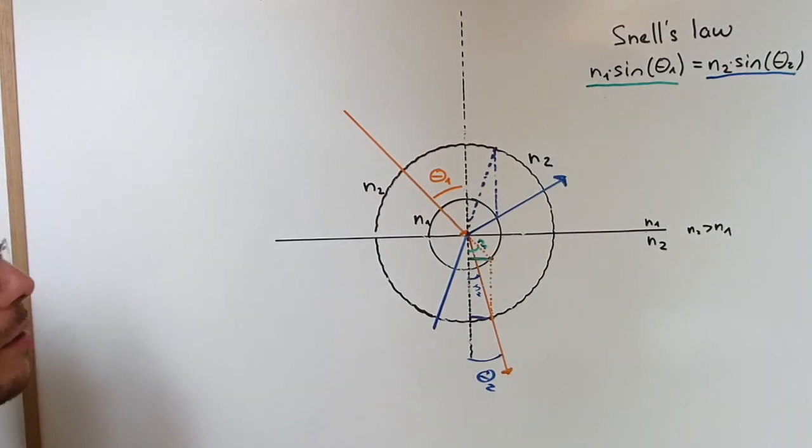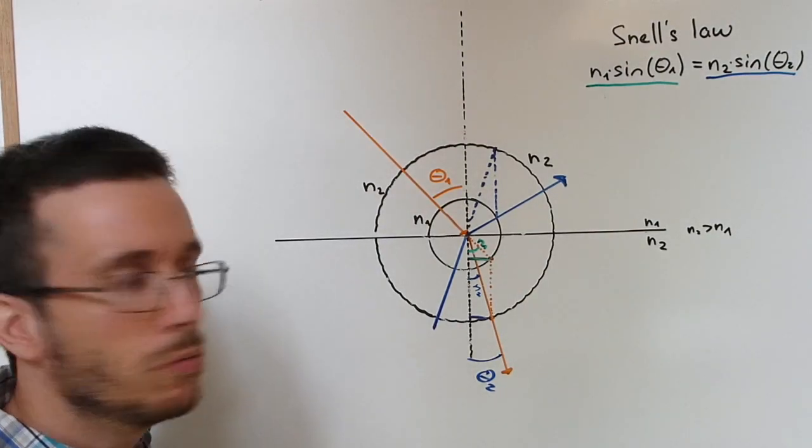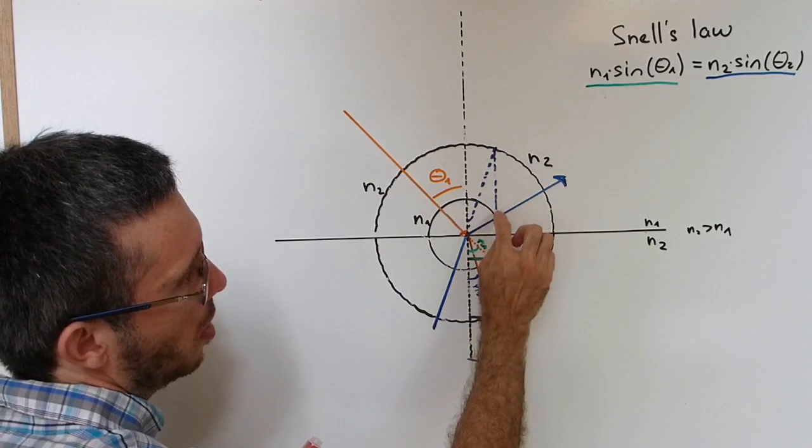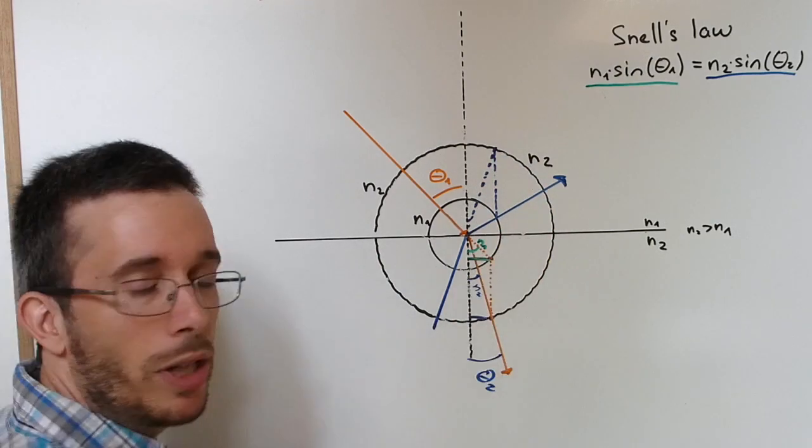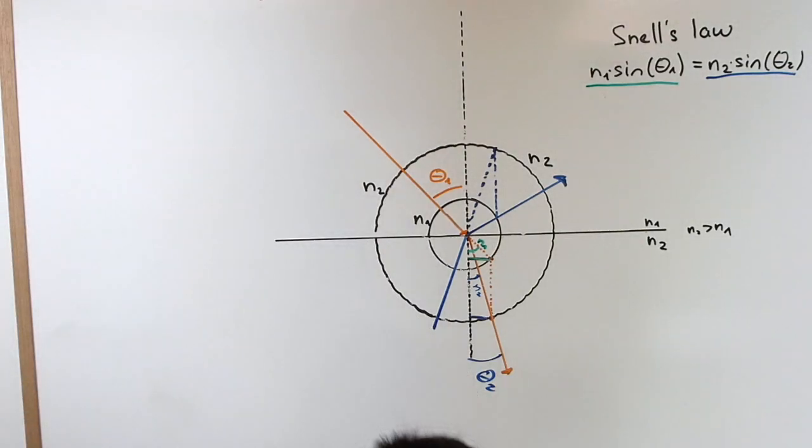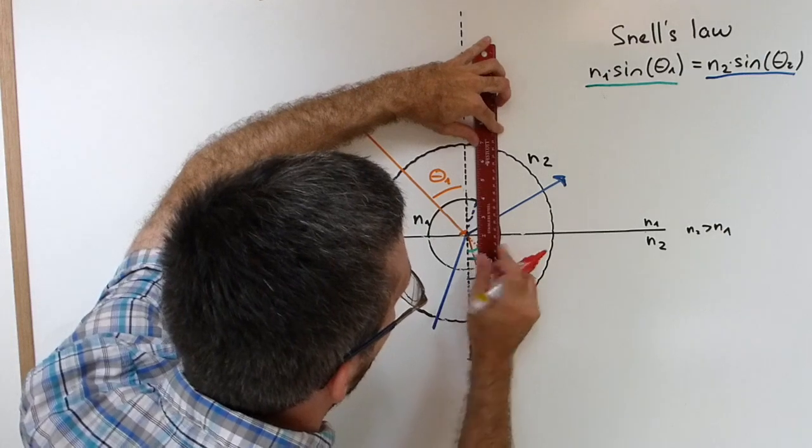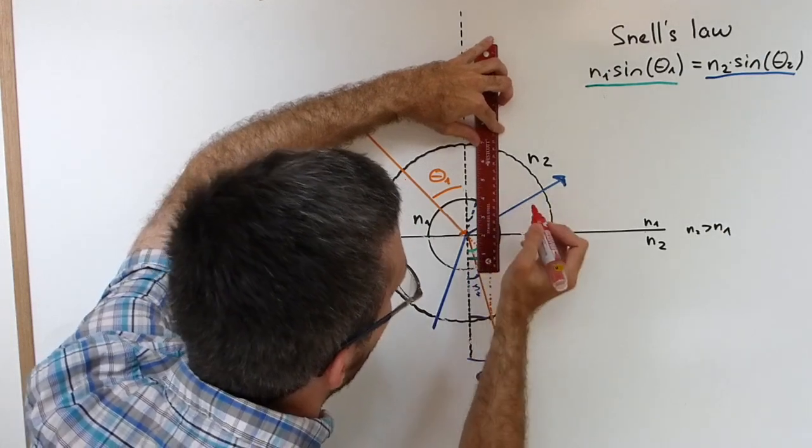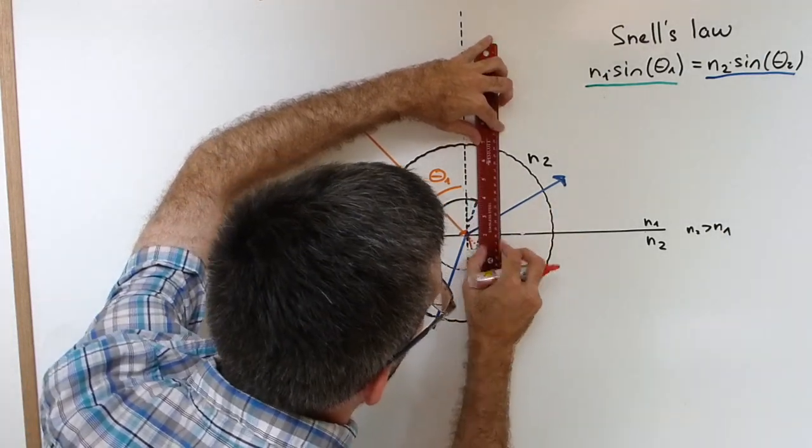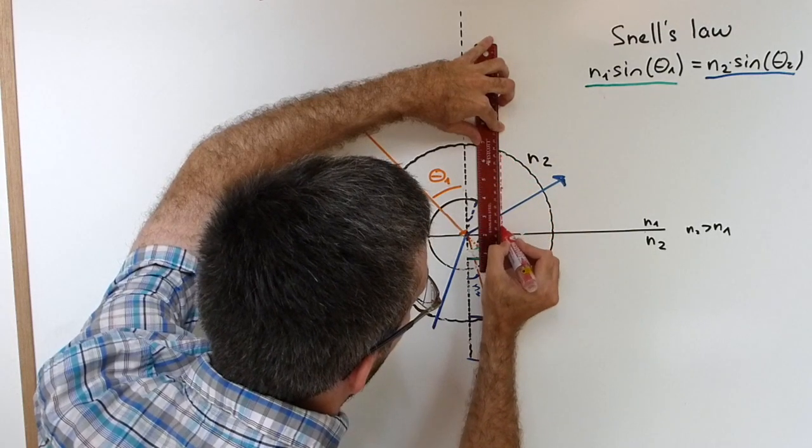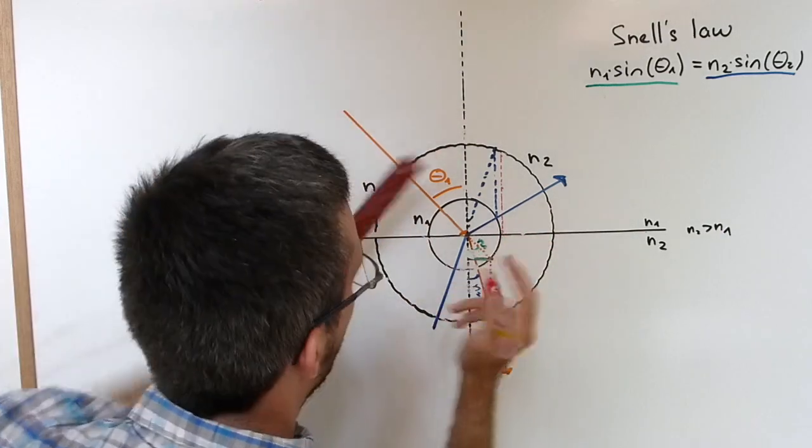Also I can very easily find the critical angle. Well, the critical angle happens when this parallel line that comes down is not hitting my lower index of refraction anymore. So to find the critical angle, I go to the most extreme end. Here. My lower index of refraction.